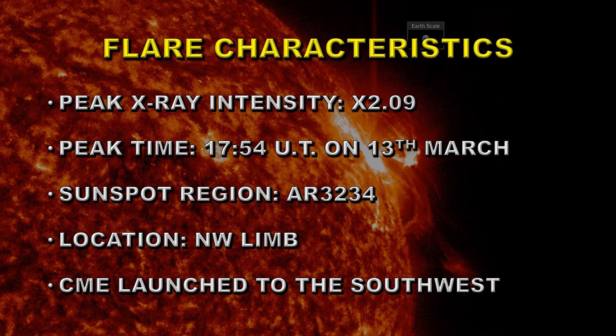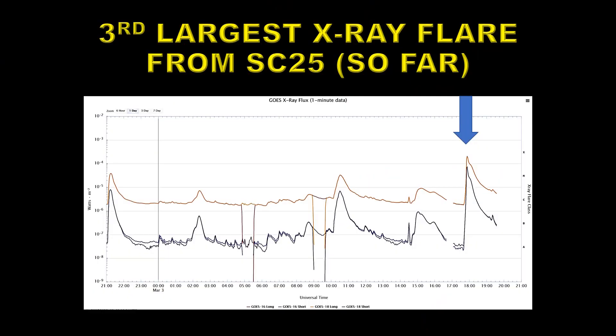It looks as though a coronal mass ejection was launched to the southwest. Here's the X-ray light curve showing the X2 flare plus two previous M flares. You can see that the flare rose very sharply to the X level, but has been decaying away very slowly, which is a sure sign that there has been a coronal mass ejection.